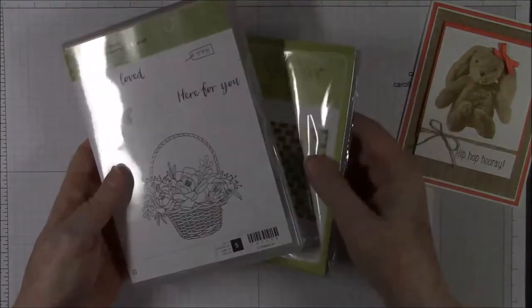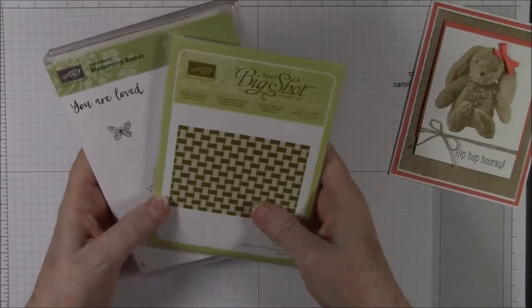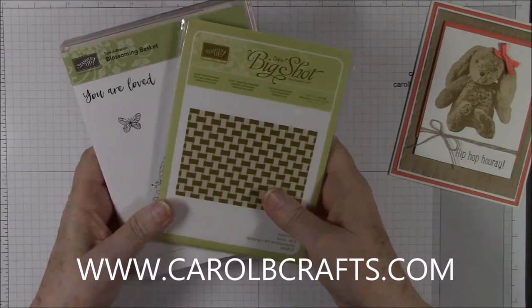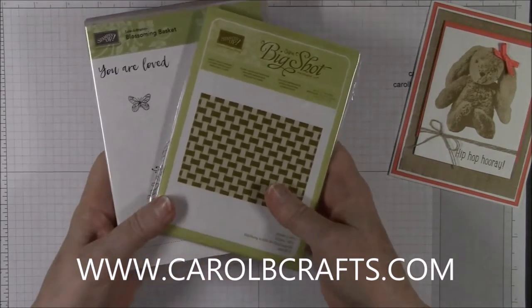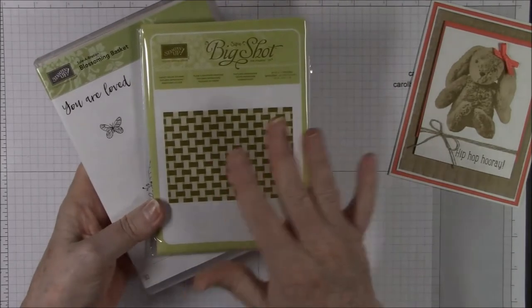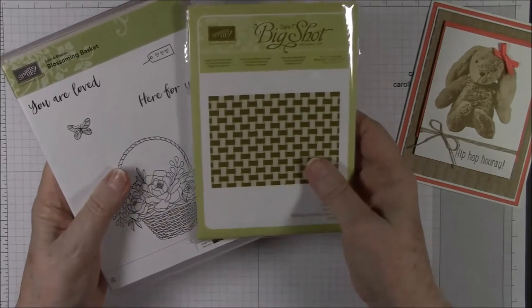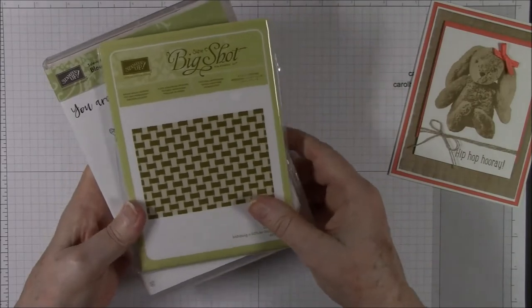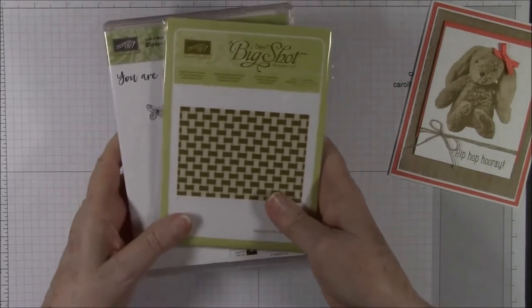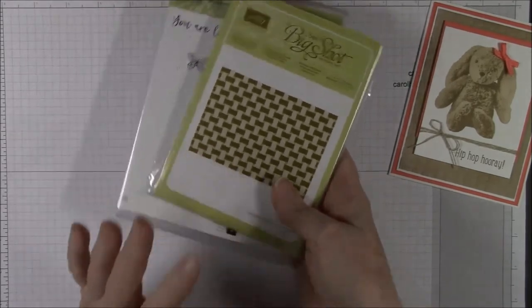But if you want to get this, use the host code on my website www.carolbcrafts.com and you'll not only get your free Sale-A-Bration items, you'll get a free class kit from me. I give a free class kit with each $60 retail purchase or more using the current host code on my website. So that's a win-win for you. So let's get started on our card.